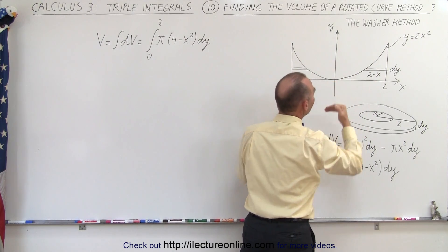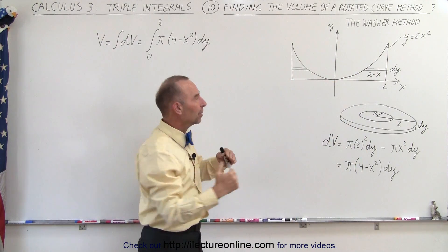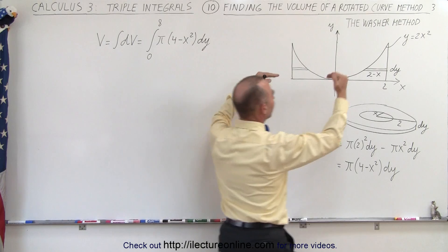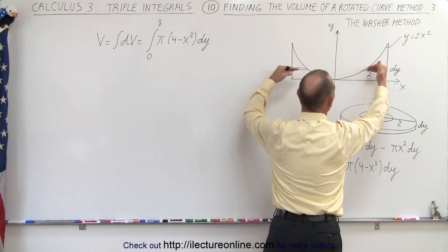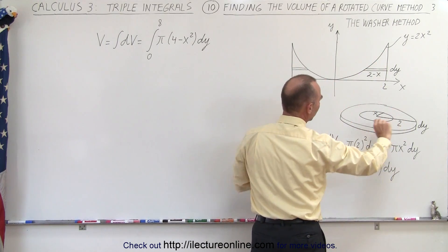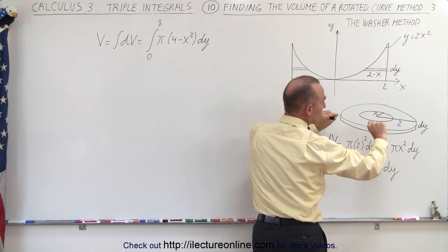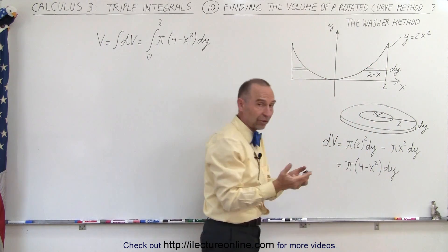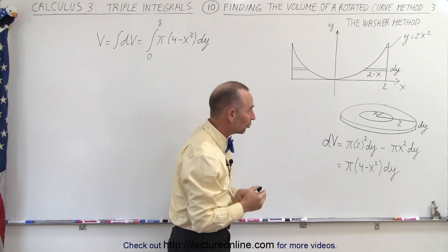In this case, we're going to take a small volume element, slicing it in this direction. We call that the washer method, because what we end up with looks like a small washer.